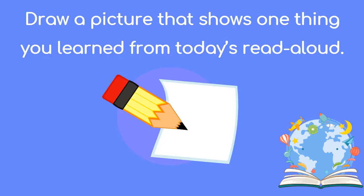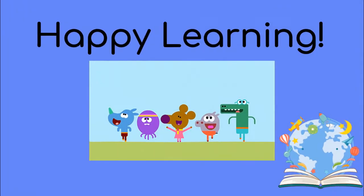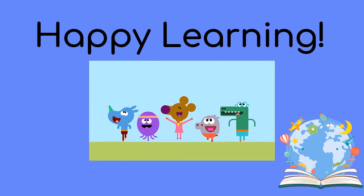What are some things you learned in today's read aloud? Draw a picture that shows one thing you learned from today's read aloud. Let's review this lesson's learning targets. Our goals are: I can recall facts about the pilgrims and Native Americans. I can describe the relationship between the pilgrims and the people from the Wampanoag tribe. I can demonstrate an understanding of the word fascinated. I can illustrate important events of the pilgrims. That completes our knowledge lesson. Happy learning!